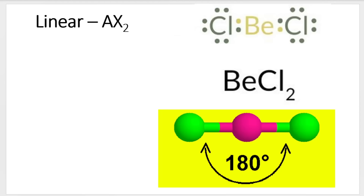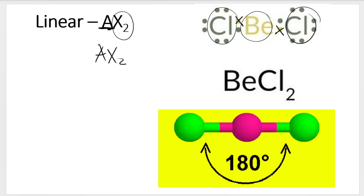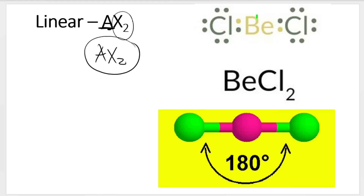An example of a linear molecule is BeCl2. If you take a look at the Lewis dot diagram of BeCl2, please use different symbols — for Be you could use crosses, and for Cl you could use dots. You can see that Be is the central atom, bonded to two chlorines, so AX2 is the general formula — this is a linear shape. Please take note there are no lone pairs on the central atom — that's a bonding pair and a bonding pair, no lone pairs. The angle between the two bonding pairs is as large as possible: 180 degrees.